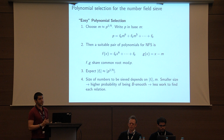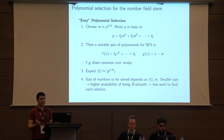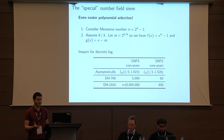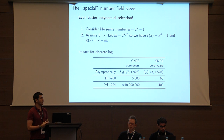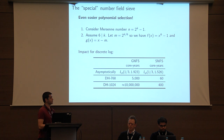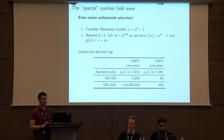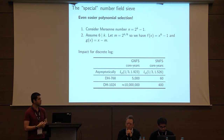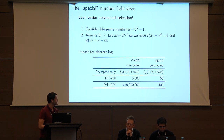This leads us to the special number field sieve, which historically preceded the general number field sieve. It was observed that for numbers expressible with a pair of polynomials with really small coefficients, the number field sieve is much more efficient. For example, with Mersenne numbers or numbers close to powers of two, it's easy to find such polynomials. The impact on asymptotic complexity is fairly large: the coefficient in L notation drops from 1.923 to 1.526.